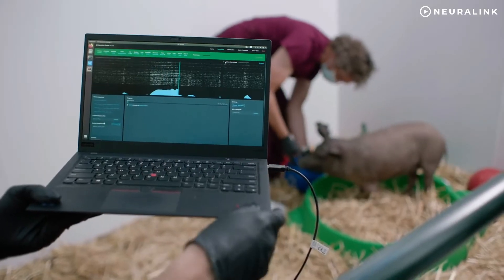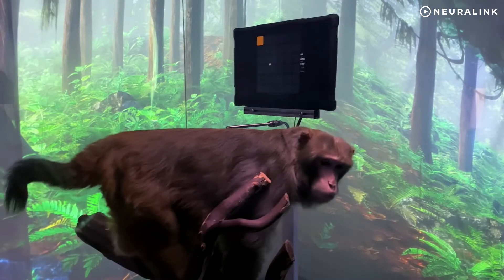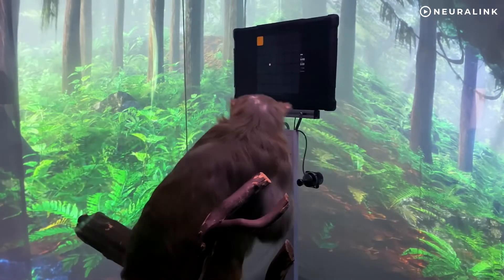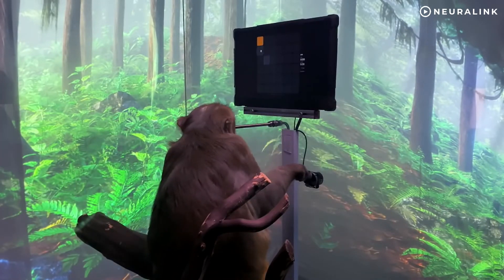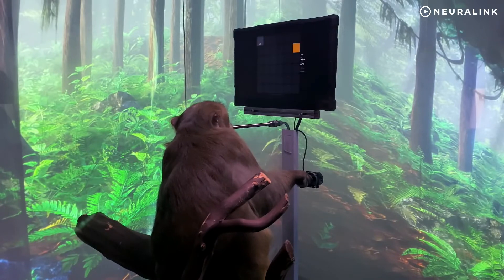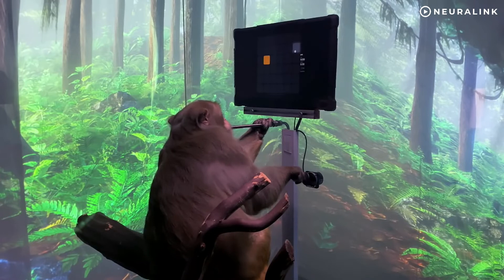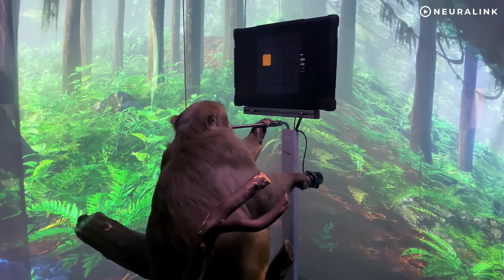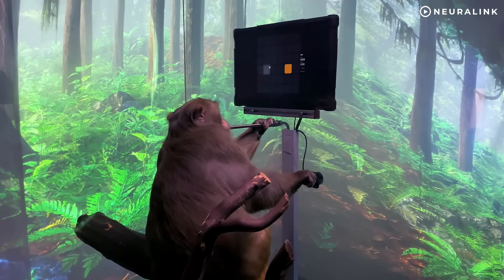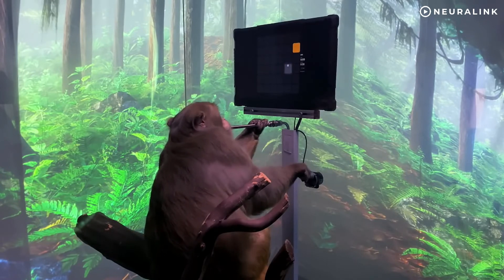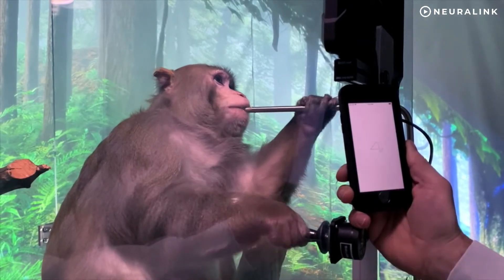Neuralink moved from using pigs to monkeys to demonstrate the brain chip technology better. The company posted a video to YouTube which shows a monkey navigating an on-screen cursor only using its mind. The nine-year-old macaque monkey named Pager had a Neuralink implanted in his brain about six weeks before the video was recorded. Pager was first taught to play the video games using a joystick for a banana smoothie reward delivered through a metal straw.